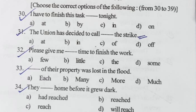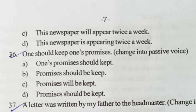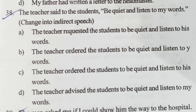Question thirty-four: 'They __ home before it gave drag.' Option — they had reached home before it gave drag. Question thirty-five: 'This newspaper appears twice a week.' Simple present tense — option B is correct. Question thirty-six: 'One should keep one's promise.' Option D is correct — promise should be kept. Question thirty-seven: change to active voice — 'A letter was written by my father to the headmaster.' Option B is correct — my father wrote a letter to the headmaster.